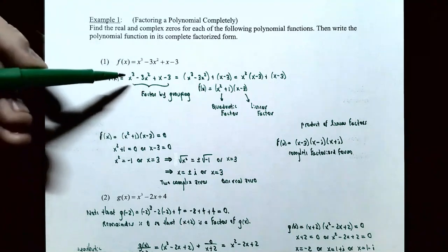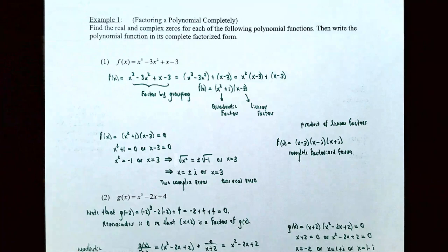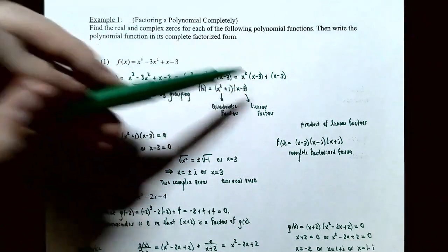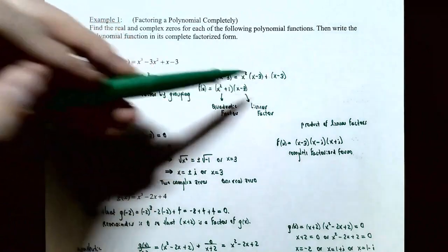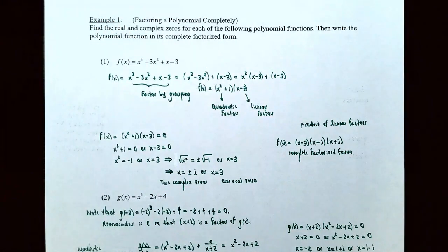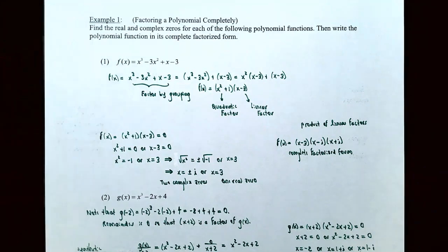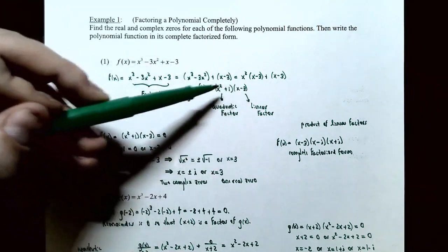For f(x) = x³ − 3x² + x − 3, notice there are four terms, so let's try factoring by grouping. Group the first two terms (x³ − 3x²) and the last two terms (x − 3). The first group has x² as a common factor, giving x²(x − 3). The second group has no GCF other than 1, so it stays (x − 3). Now (x − 3) is common to both groups and can be factored out.